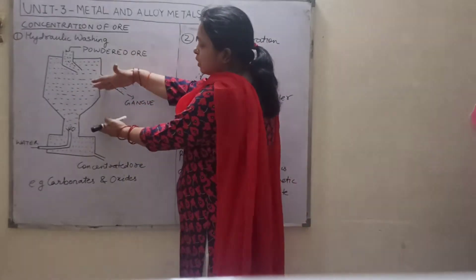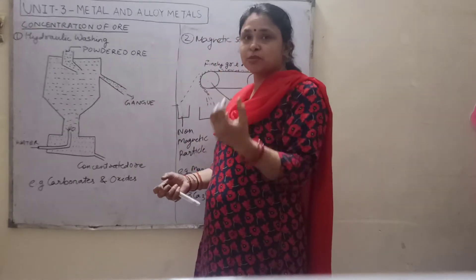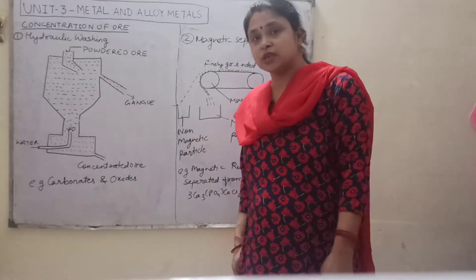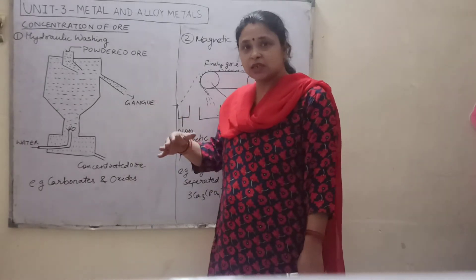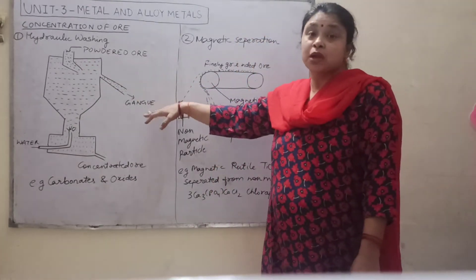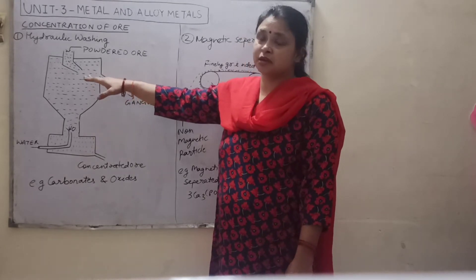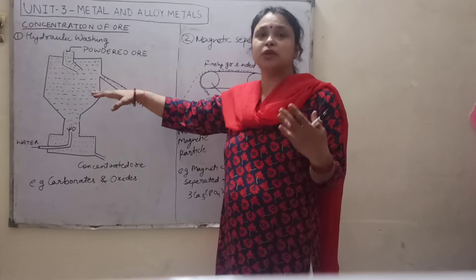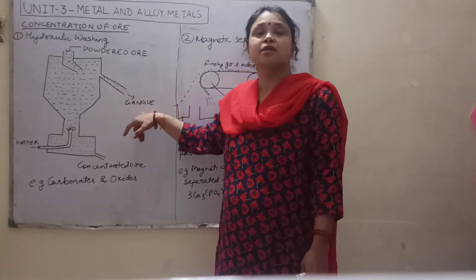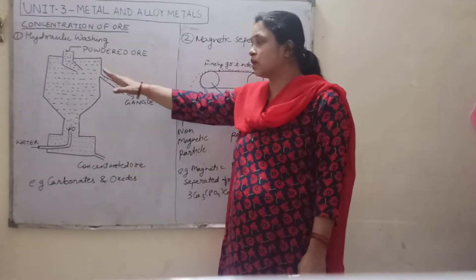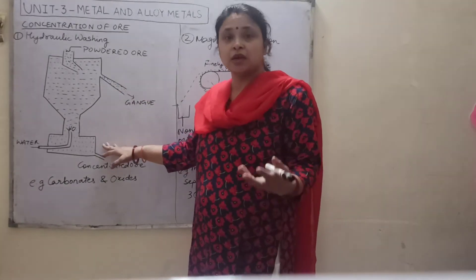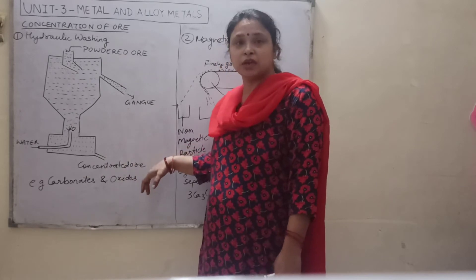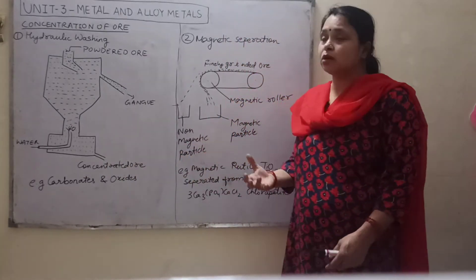What happens is that the suspension of ore we made undergoes mixing. Due to this mixing, the unwanted particles or unwanted impurities present in the ore — what we call gangue — being lighter, they stay on top and get washed away with water. The important part of the ore, the combined state of the metal, is heavy and stays at the bottom, and we collect it from below — this is called concentrated ore.